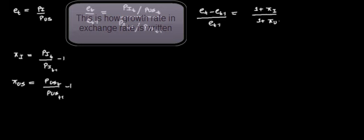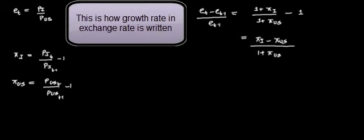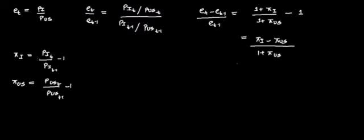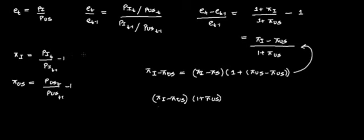And et upon et minus one could be written like this. This is the way you write the inflation rates, and the growth rate in exchange rate is et minus et minus one upon et minus one. Note how the numerator is written.